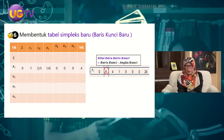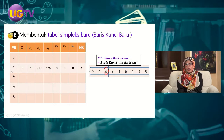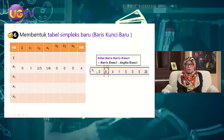Pada tabel simplex yang baru, pertama kita isi baris kunci. Nilai baris kunci yang baru adalah baris kunci lama dibagi angka kunci, yaitu dibagi 6. Hasilnya: 0, 6/6=1, 4/6=2/3, 1/6, dan 0 untuk S2, S3, S4, serta 24/6=4 untuk nilai kanan.